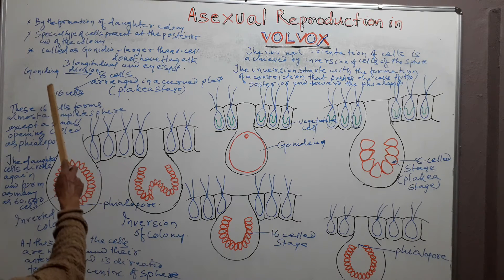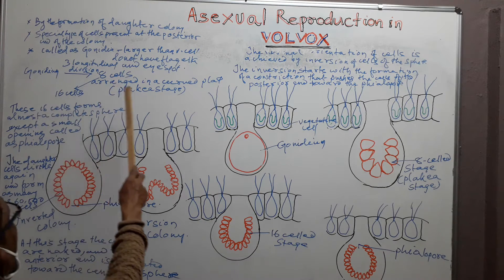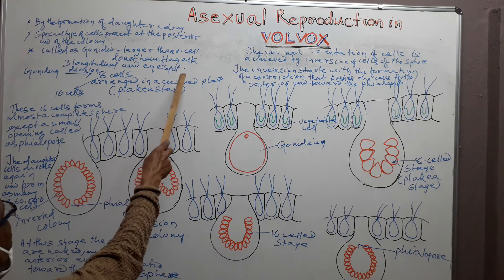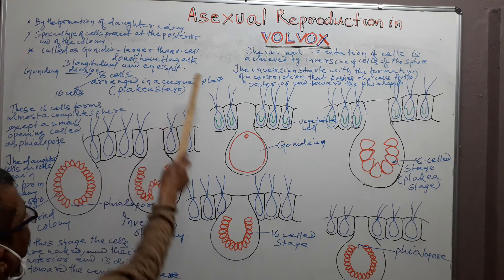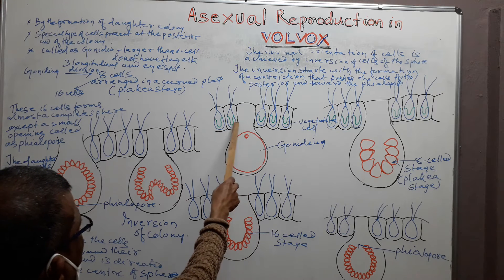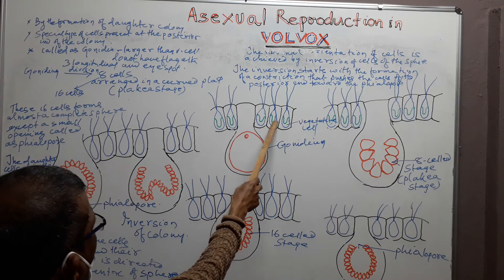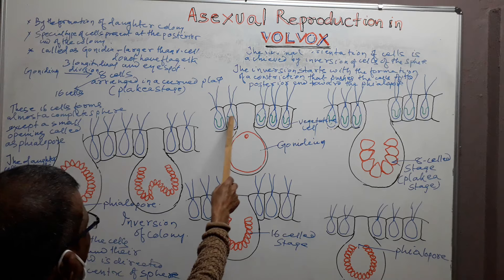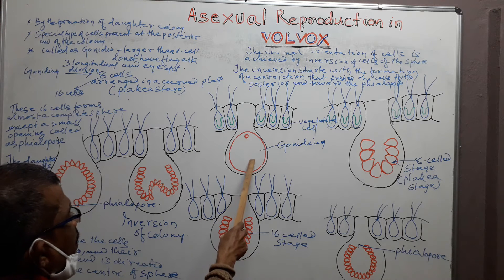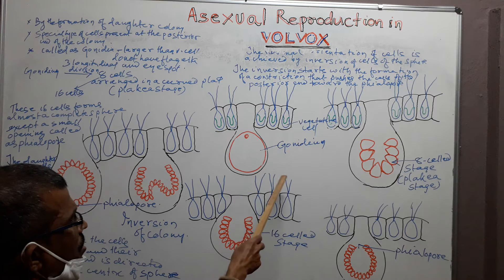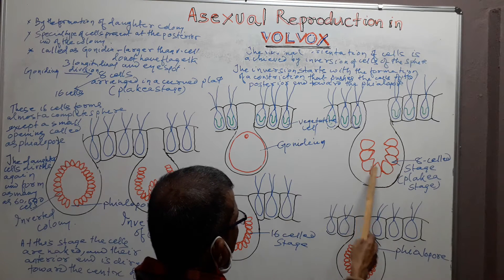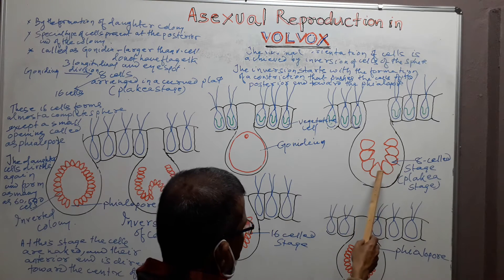The Gonidia are larger than the vegetative cells. They do not have flagella. Here, this is a Gonidium which is larger than the vegetative cell. These are the vegetative cells. Each Gonidium undergoes three longitudinal divisions that result in the formation of eight daughter cells.